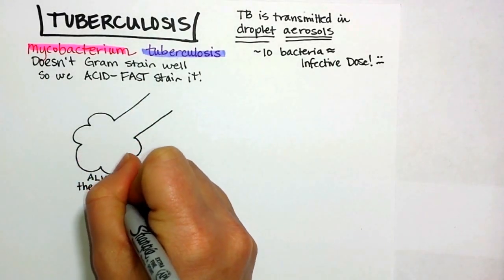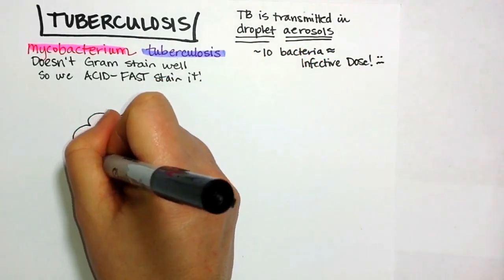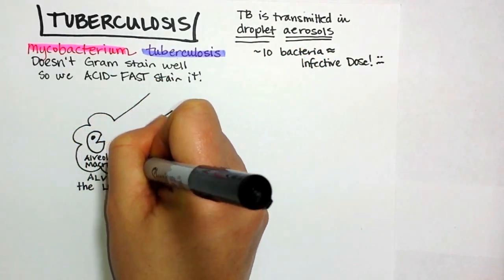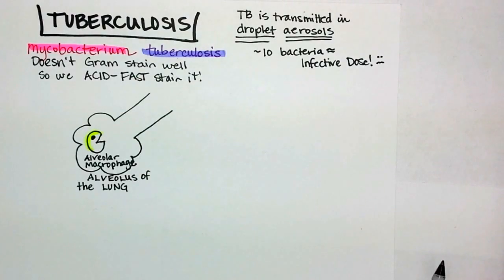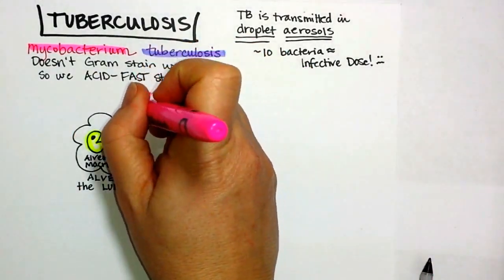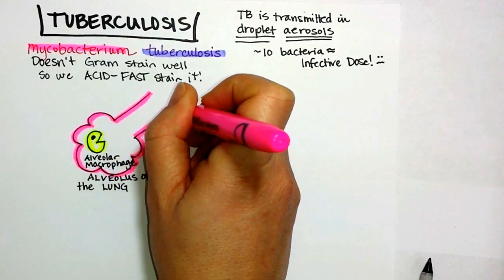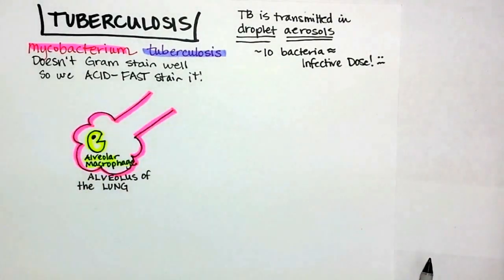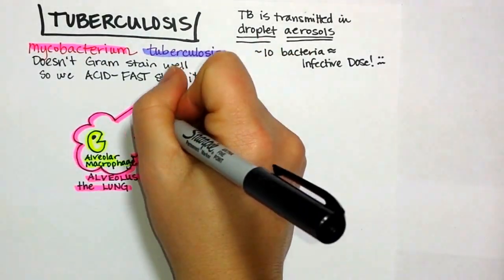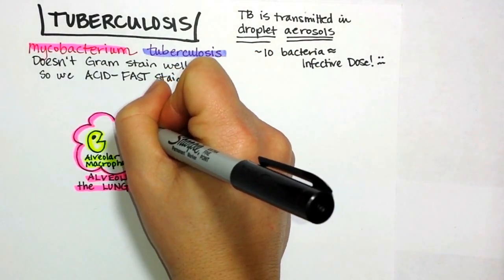What we're drawing here now is an alveolus of the lung. That little Pac-Man is an alveolar macrophage, and its job is to keep you from getting sick by ingesting bacteria or other debris that gets into your lungs. We want to keep that alveolus clean.